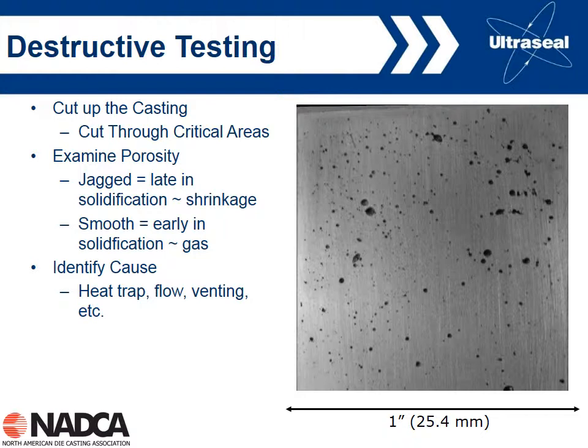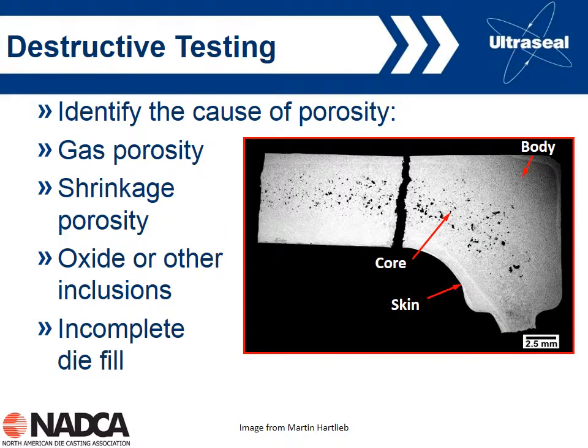If we identify shrinkage pores, we need to identify the cause — was there a heat trap, maybe a core pin close by, a remote heavy section not fed from the biscuit and runner? Was there inadequate venting? With destructive testing we can look at the sectioned casting and try to determine the cause of the porosity.